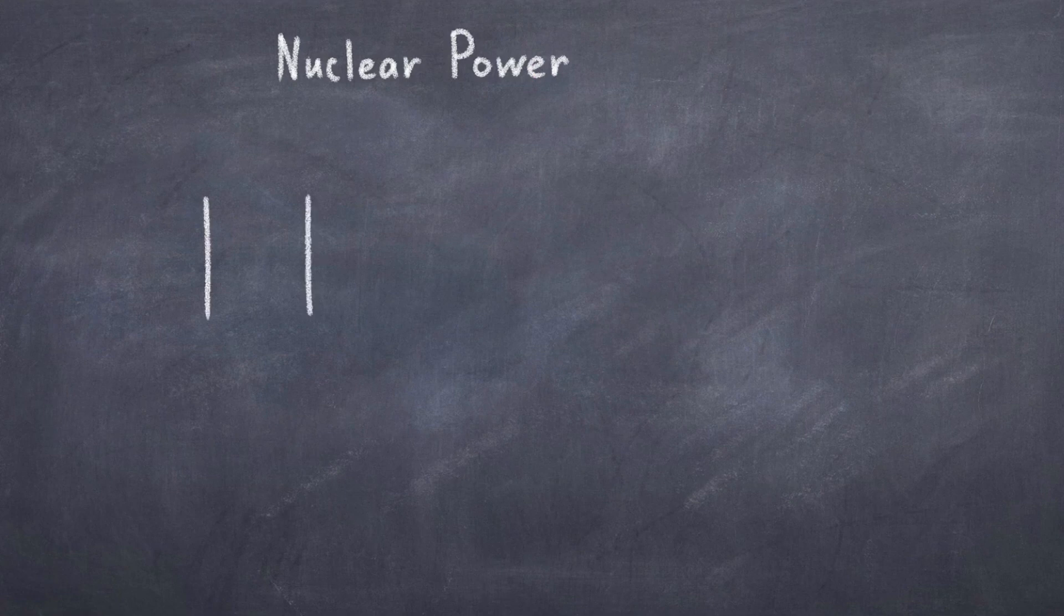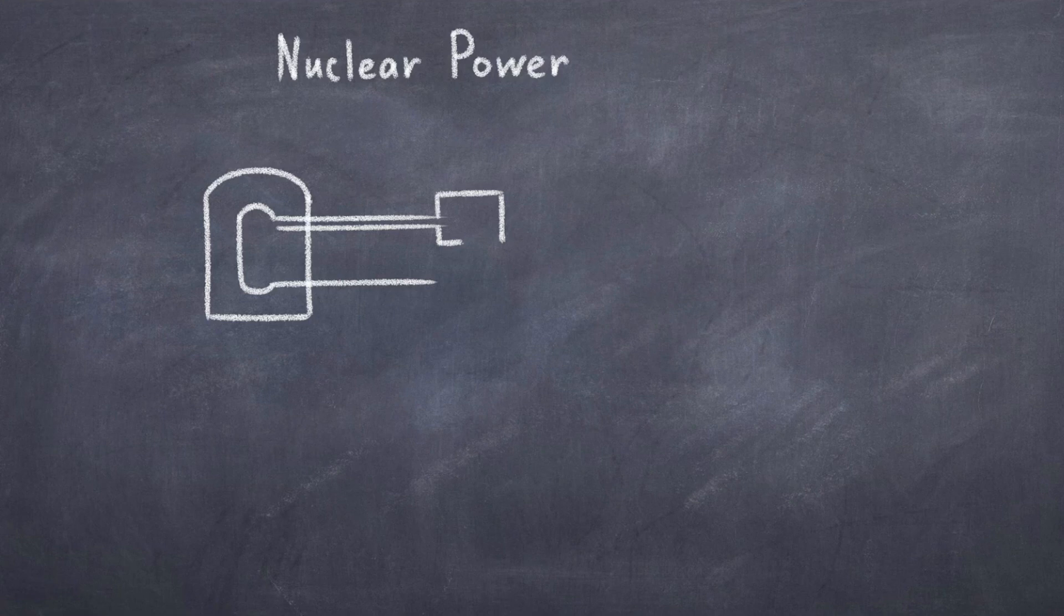While fusion in theory gives you more energy, and it's what powers the sun, it is much harder to replicate on earth, because you need so much energy to overcome this Coulomb barrier. To make fusion on earth, you basically have to make a small sun, and then somehow extract the energy from that.